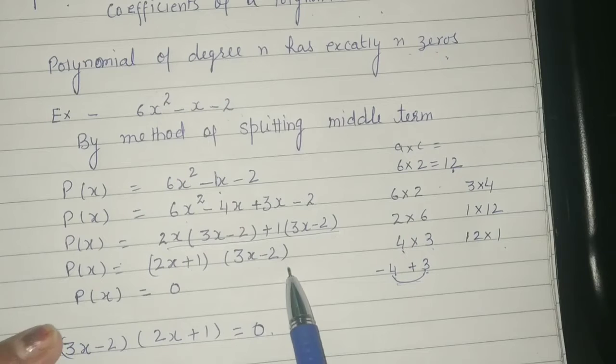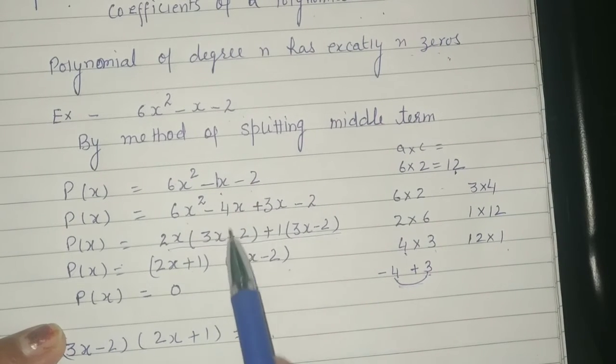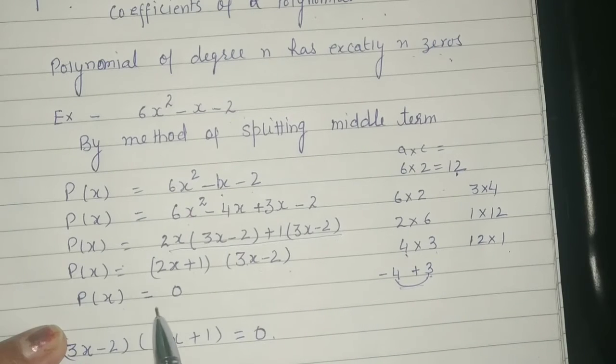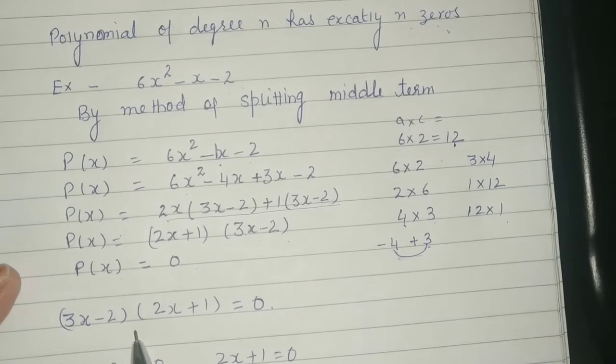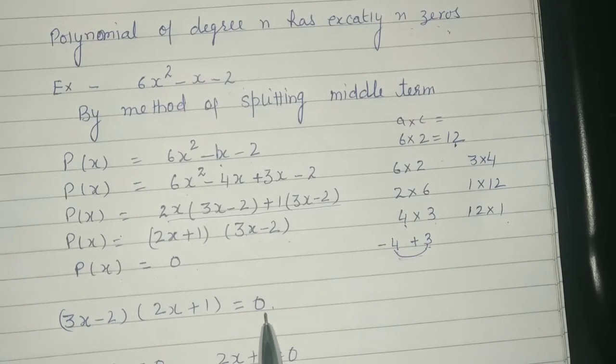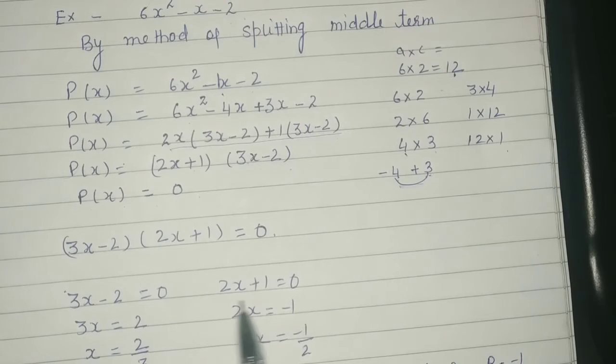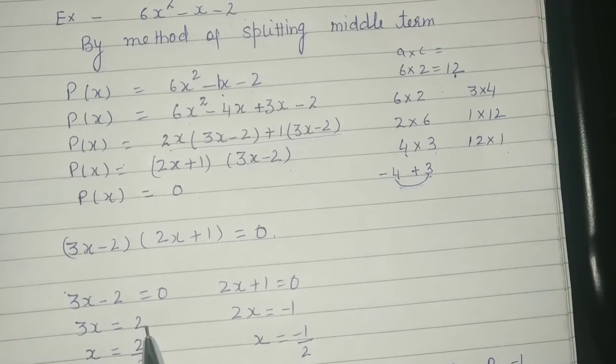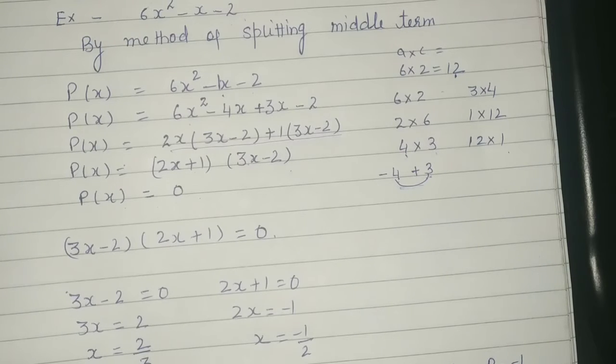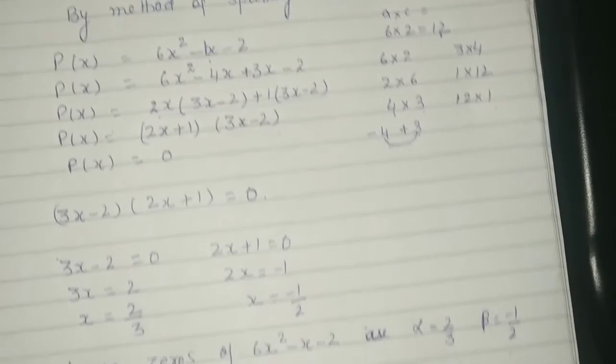We know that these are the factors of this polynomial. By putting them equal to 0, we get 3x minus 2 equals 0 and 2x plus 1 equals 0. 3x equals 2 and we get value of x is 2 upon 3, and value of x is minus 1 upon 2.